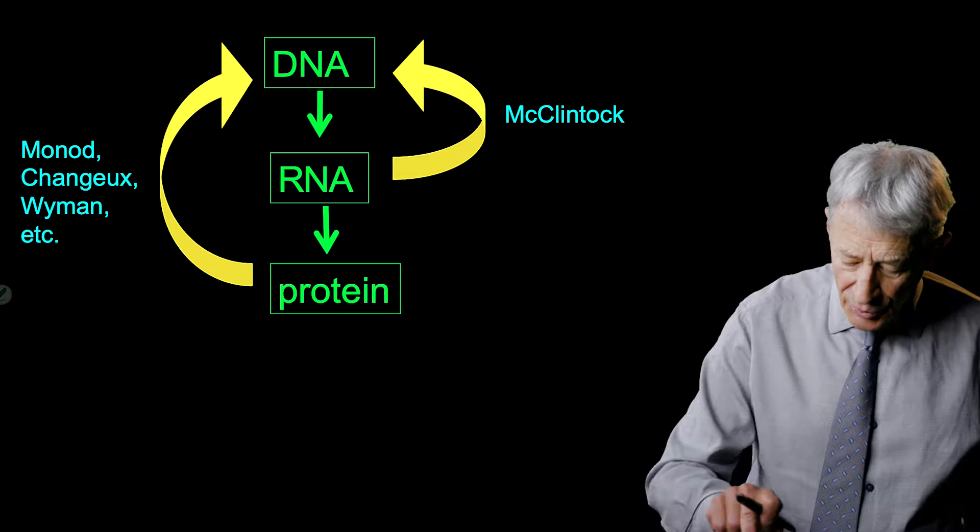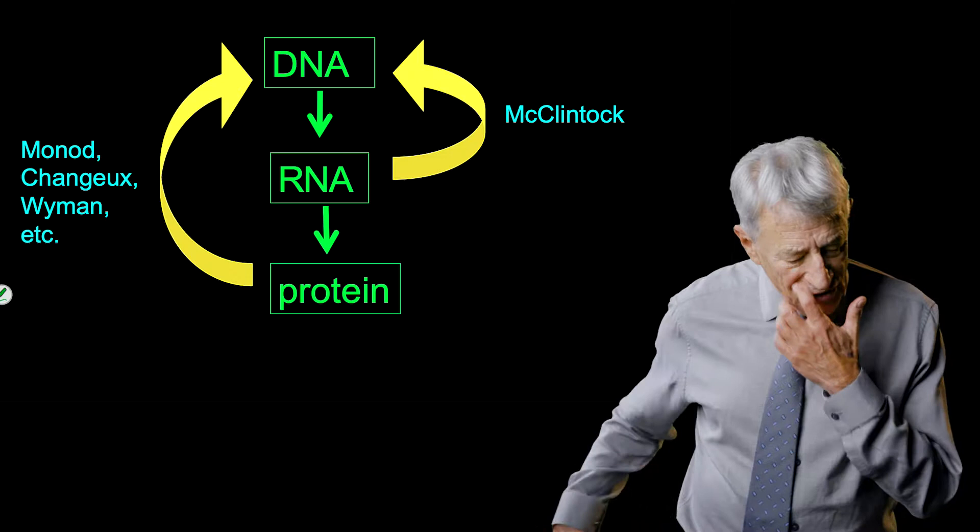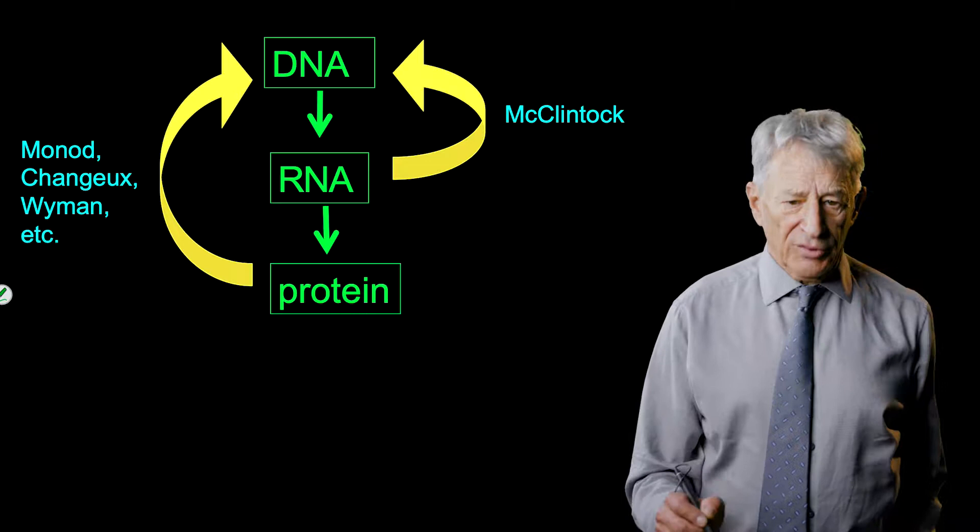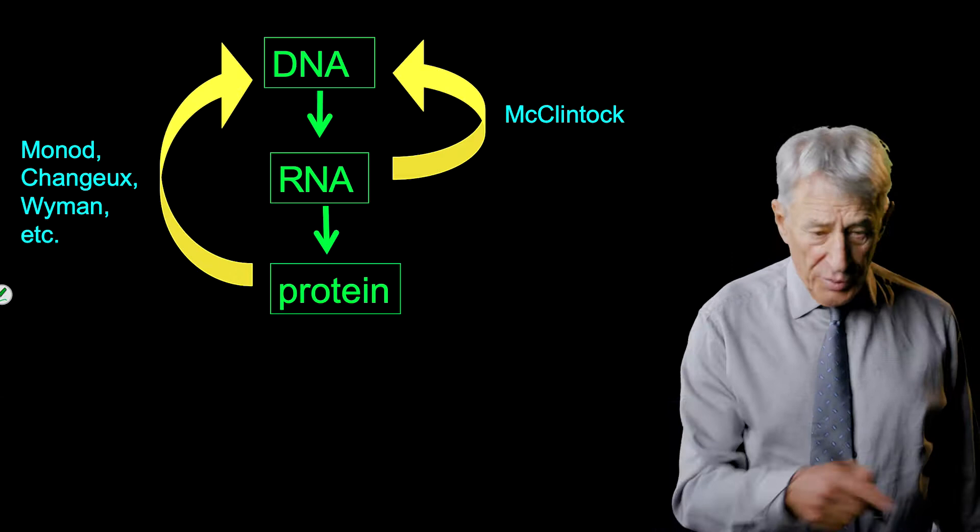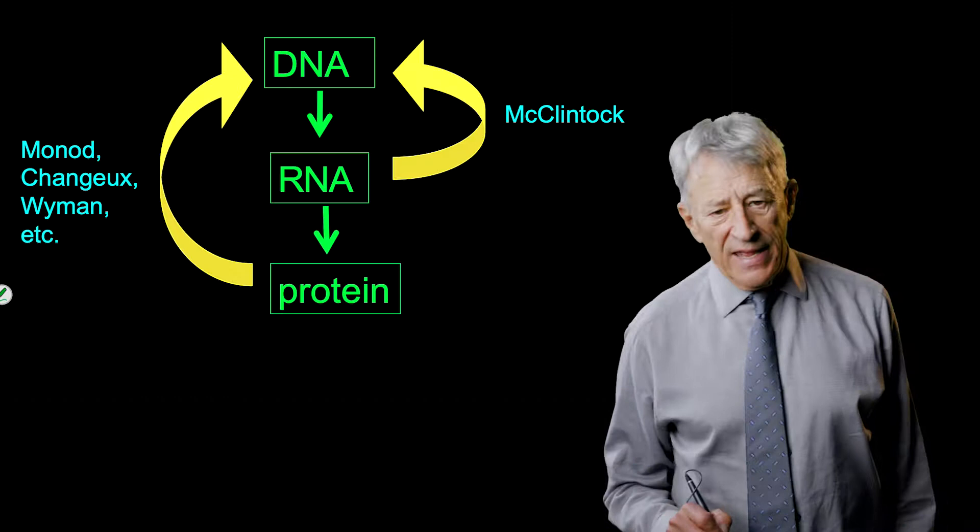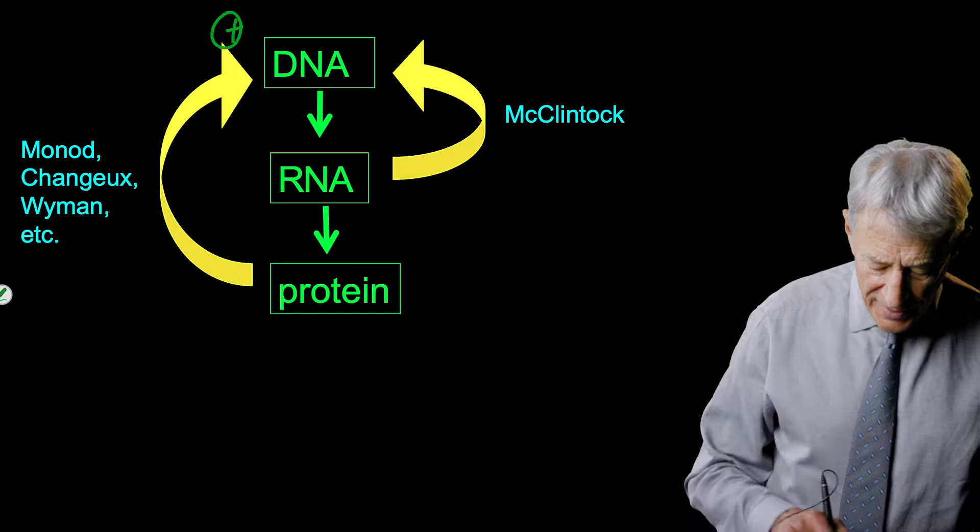So, we can go back to the central dogma, which is the green at the center, and now we add McClintock's feedback loop, and we add the Monod, Changeux, Jacob should be added there.